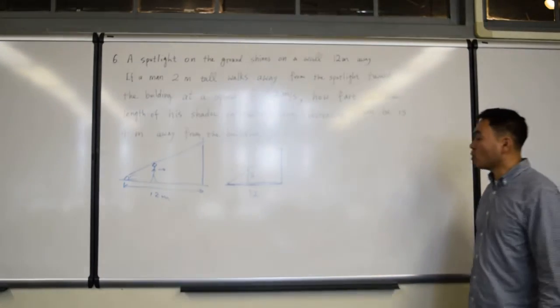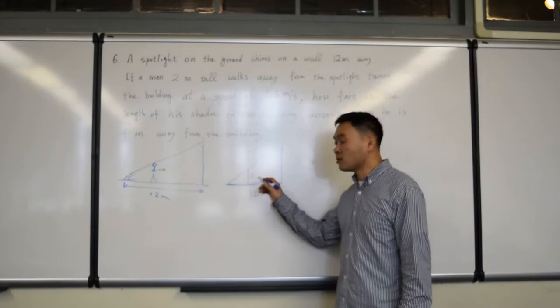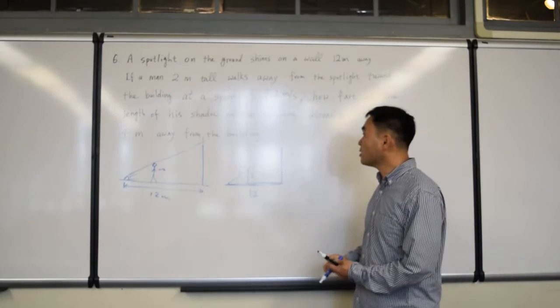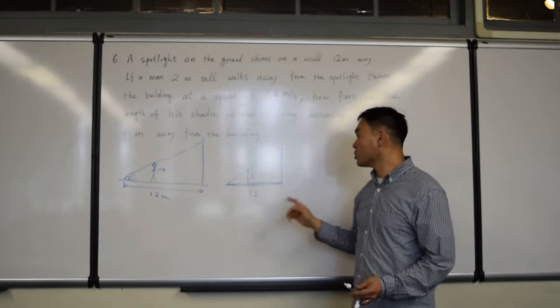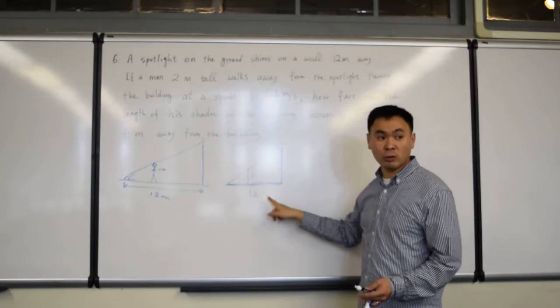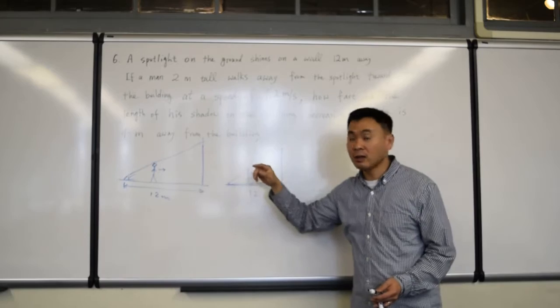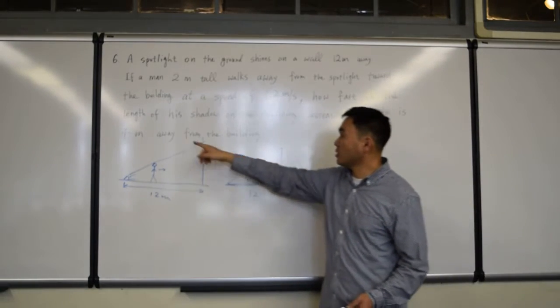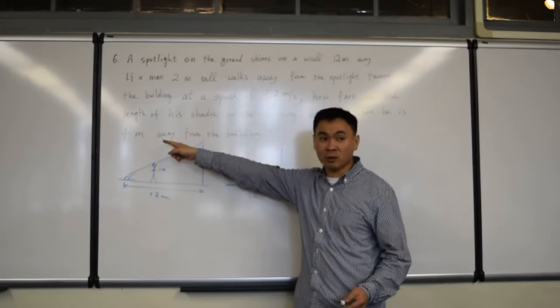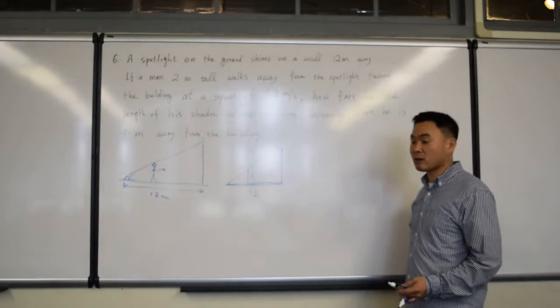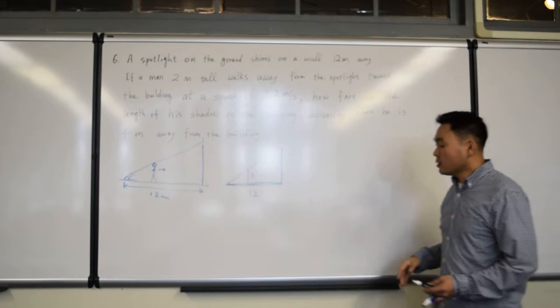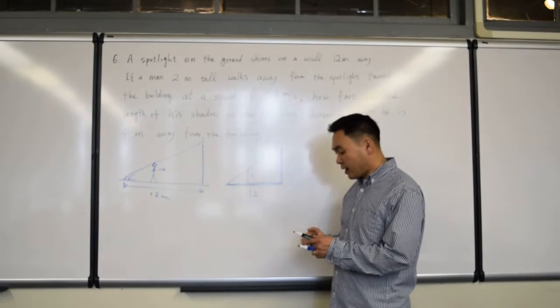Now, the key is to only write numbers that are unchanging, okay? See, in the question, you have 12, 2, and 4. You're only going to write the numbers that are unchanging, 2 and 12. Do not write 4. Why? Because he is walking towards the building, and therefore his position with respect to the building is always changing, okay? So that's all I have.